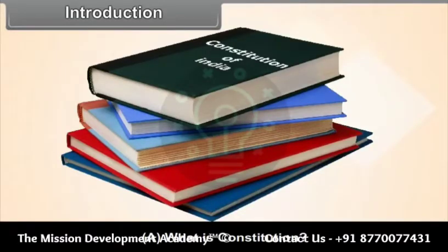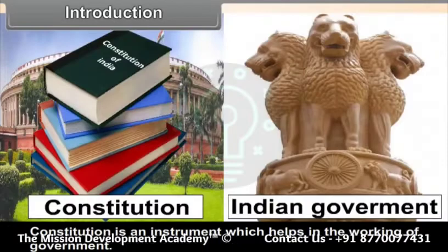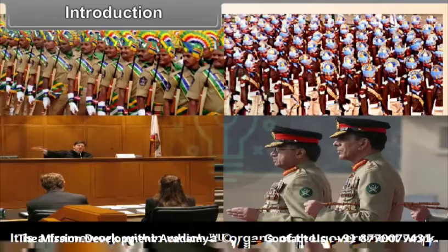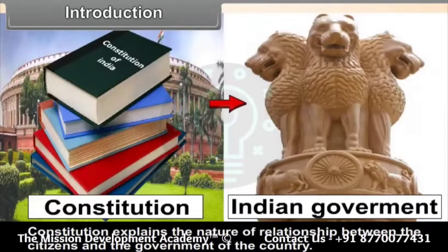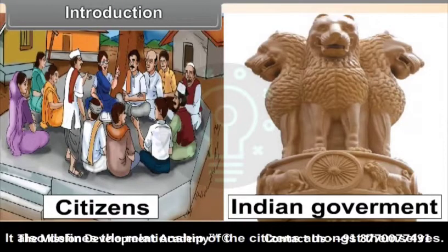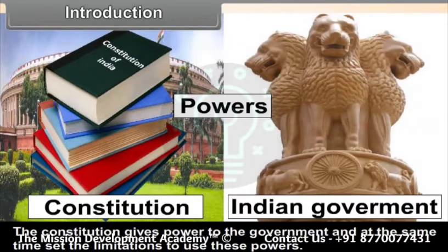What is a constitution? Constitution is the fundamental law of the country. All other laws are subordinate to the constitution. It is an instrument which helps in the working of government — a framework within which all organs of government work. Constitution helps define the nature of the relationship between the citizens and the government, and also defines the relationship of citizens amongst themselves. The constitution gives powers to the government and, at the same time, sets limitations on the use of these powers.